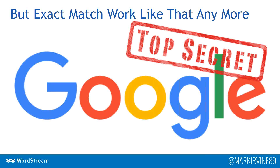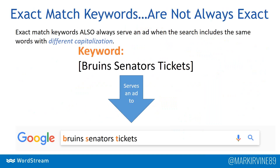But that's actually not an accurate description of how exact match works anymore. Going back a month, Google made this announcement on St. Patrick's Day — March 19th — just under a month ago. Google announced that exact match keywords are no longer going to match only that way; they're going to reach out to a bunch more different searches. I want to detail all of these changes because they're going to be significant.